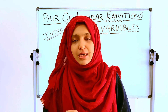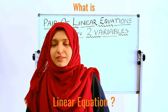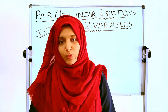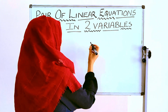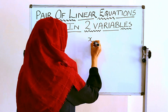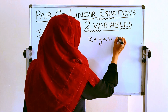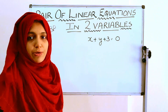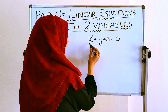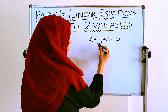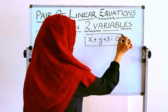We will complete the third chapter on linear equations. What is a linear equation? A polynomial having degree 1 and equated to 0 is a linear equation. For example, x plus y plus 3 equal to 0. This is a linear equation because x and y are variables with degree 1.